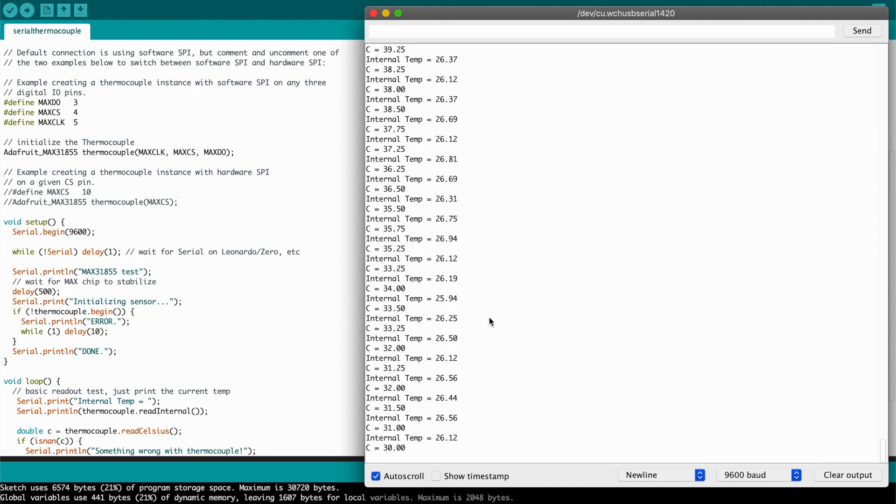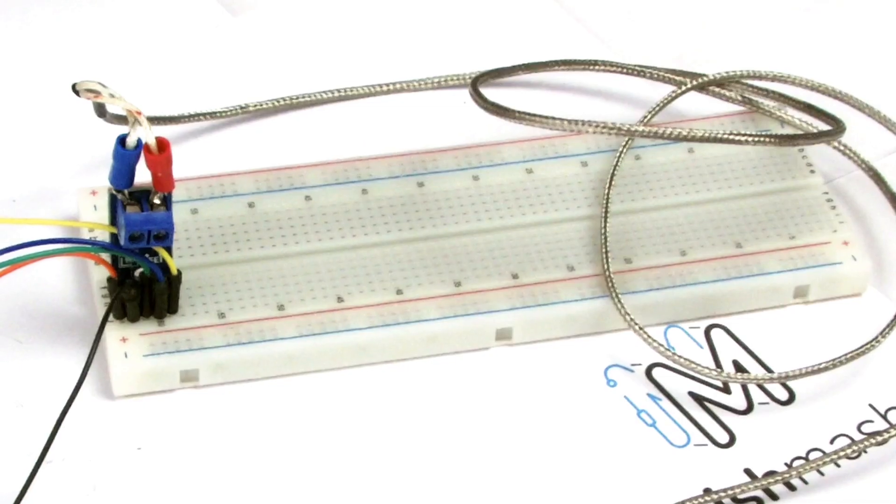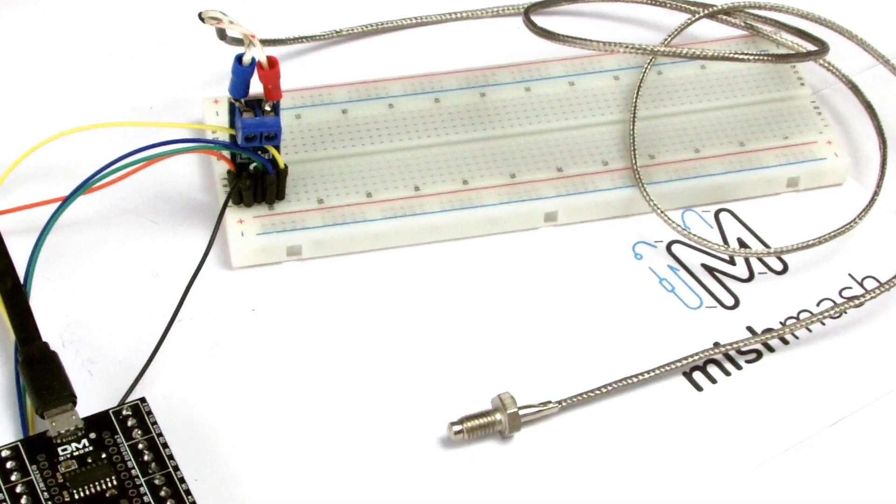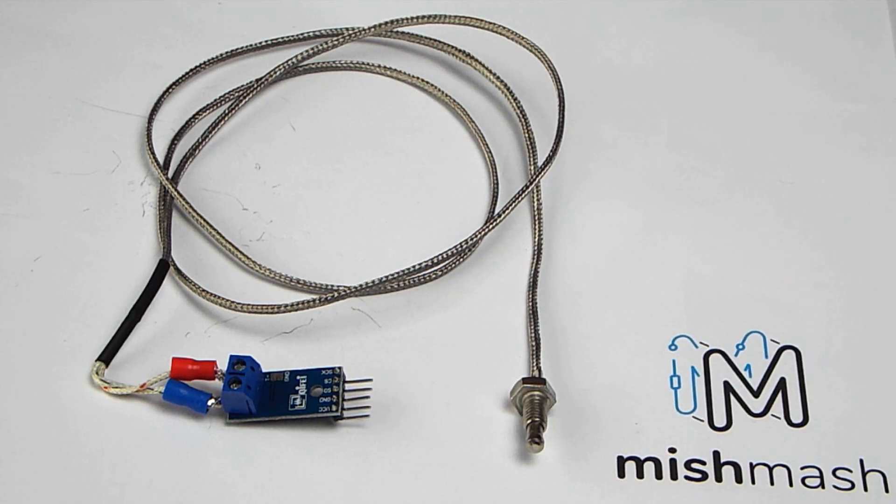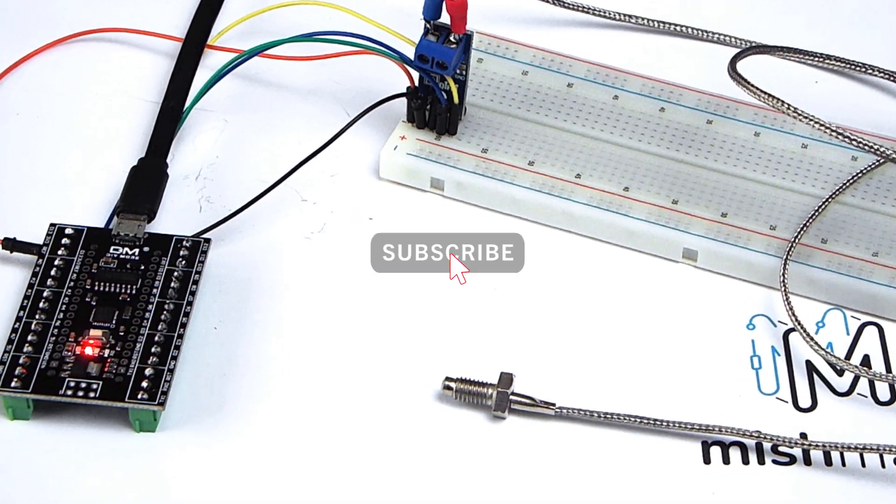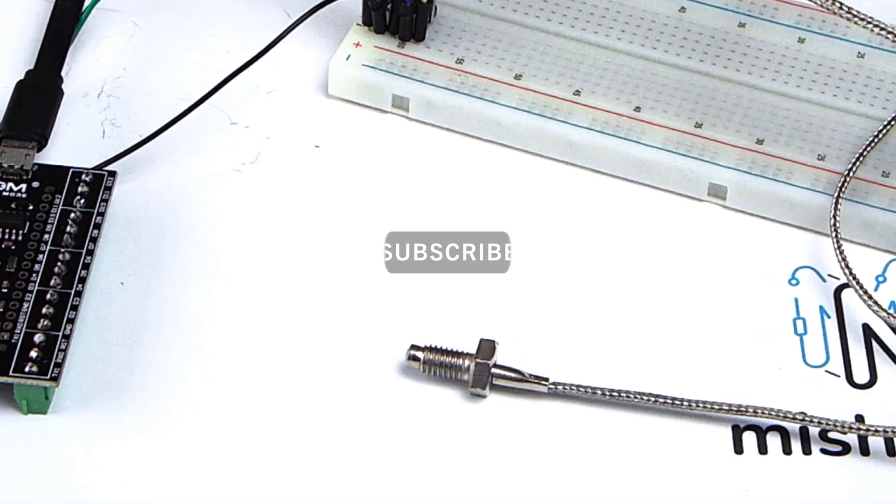We are reading data from the MAX 31855K thermocouple amplifier breakout board. In a later video we will use this information to control a high voltage relay. I hope you found this video informative. Please like and subscribe. Thanks for watching.